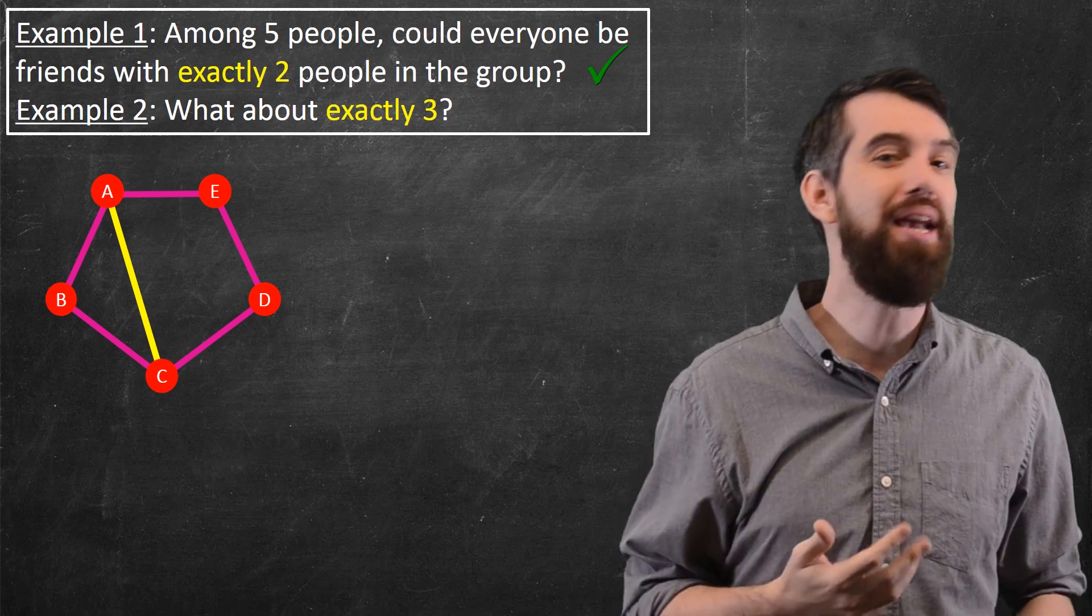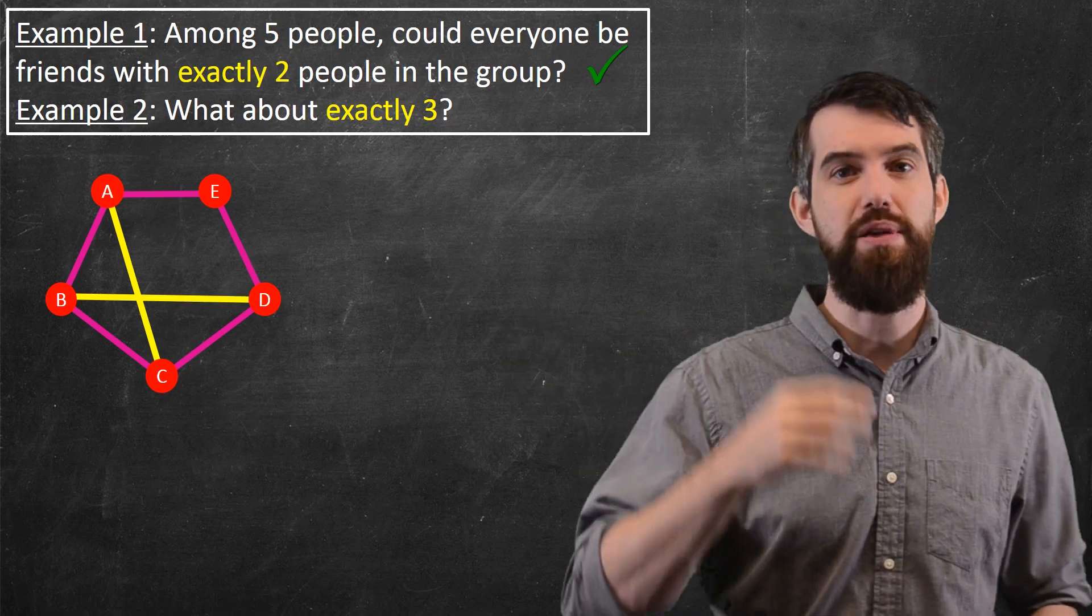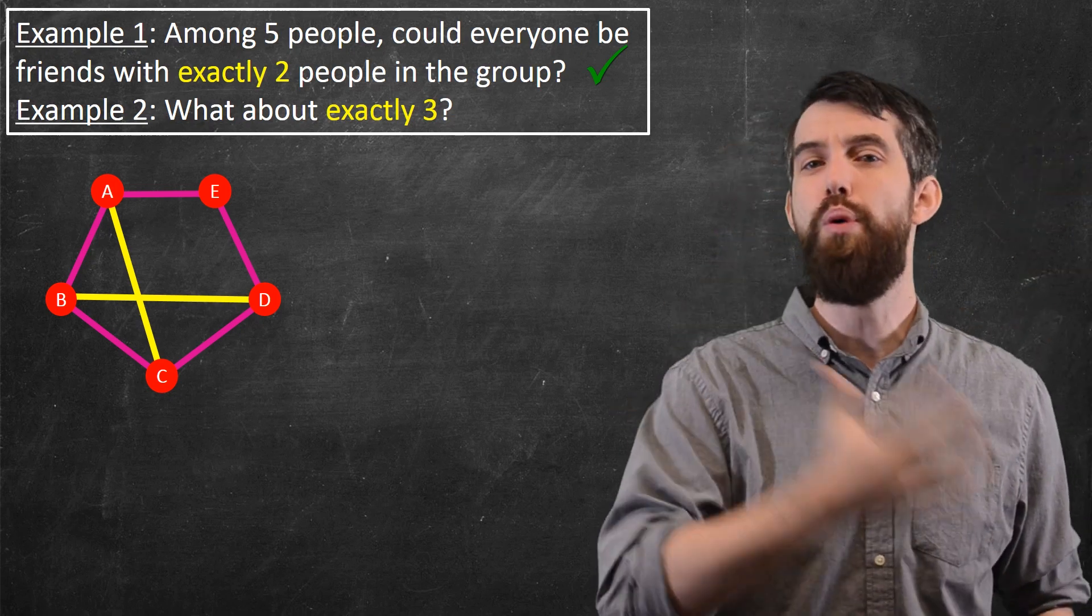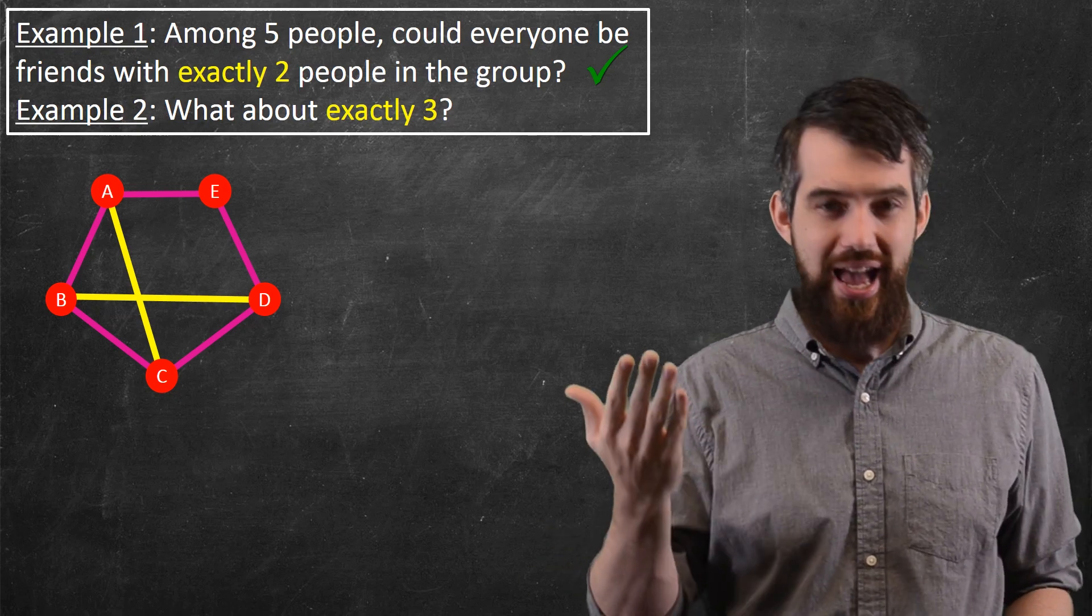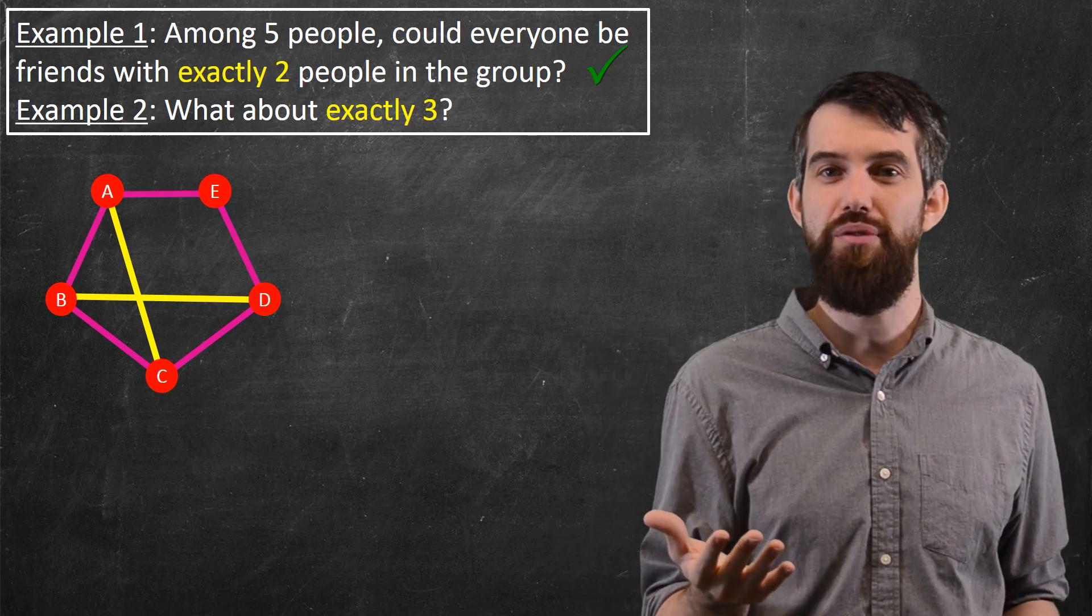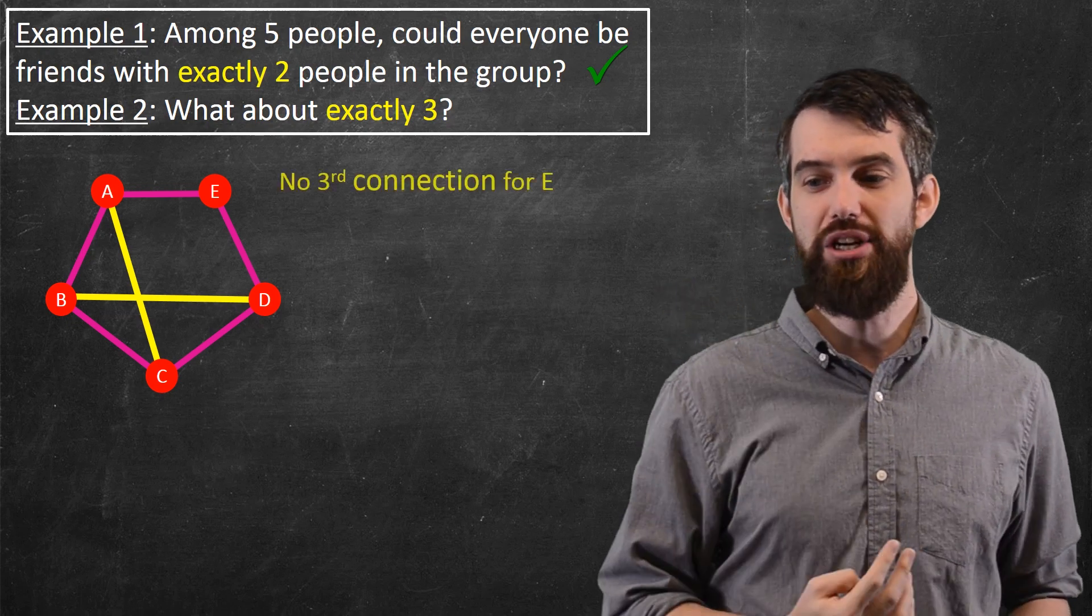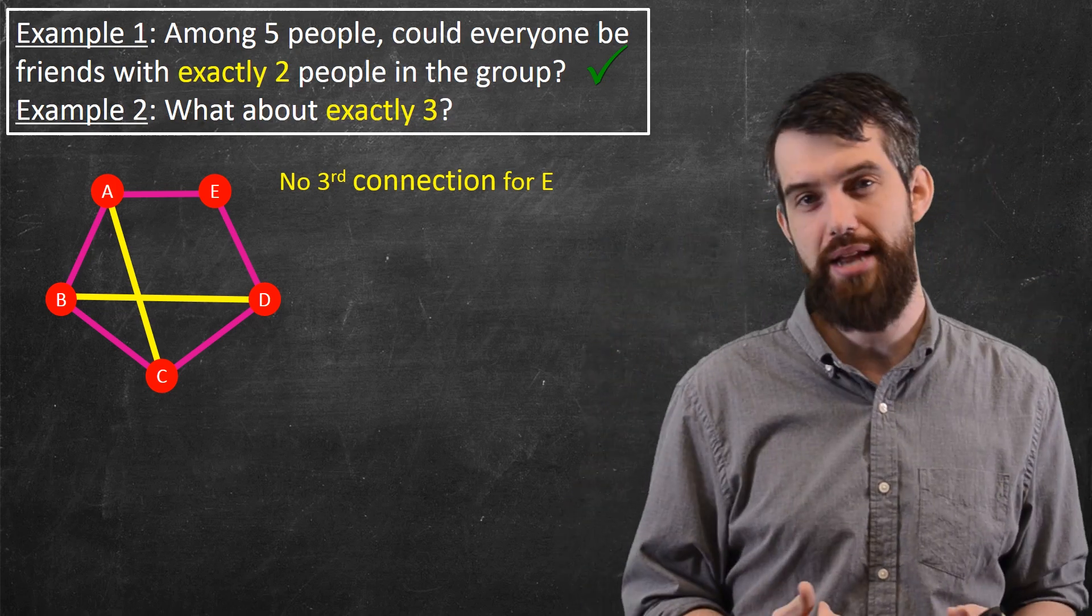Okay, B will be connected to somebody else. How about B and D could be connected? So, then B's got three people and D's got three people. A and C had three people. But what about E? I can't connect E to a third person, because if I add another connection in here, then one of the other ones is going to go up to four. So, it's actually impossible to have the third connection for E, at least the way I have drawn it down.